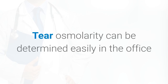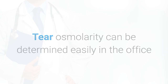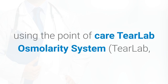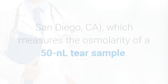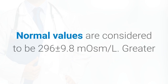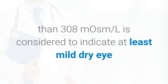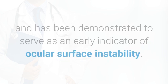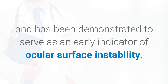Tear osmolarity can be determined easily in the office using the point-of-care TearLab Osmolarity System (TearLab, San Diego, CA), which measures the osmolarity of a 50 nL tear sample. Normal values are considered to be 296 ± 9.8 mOsm/L. Greater than 308 mOsm/L is considered to indicate at least mild dry eye, and has been demonstrated to serve as an early indicator of ocular surface instability.